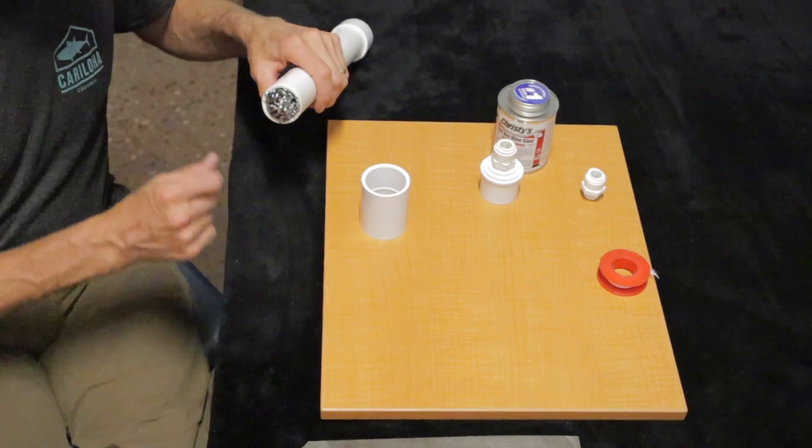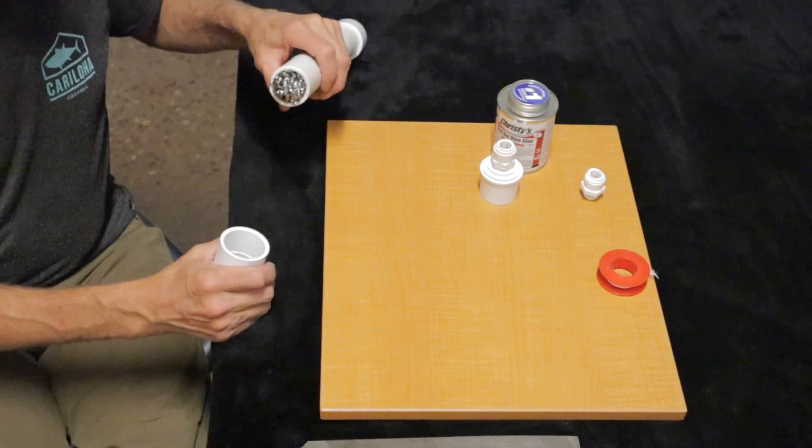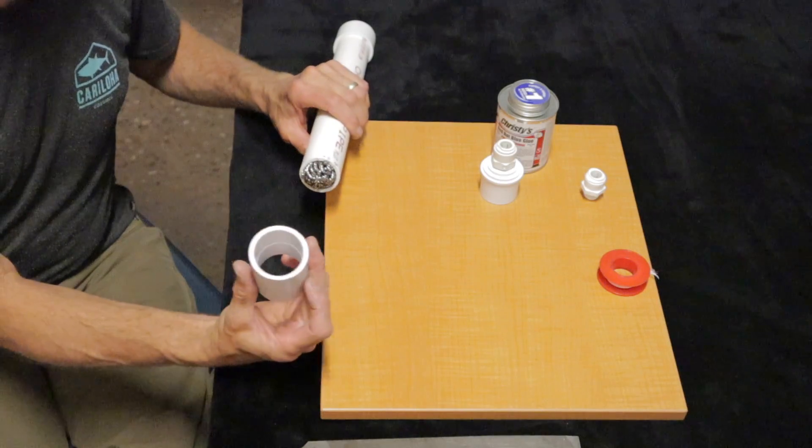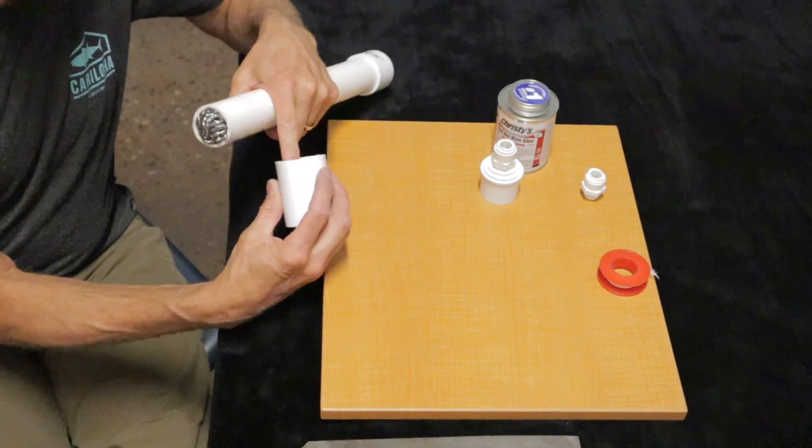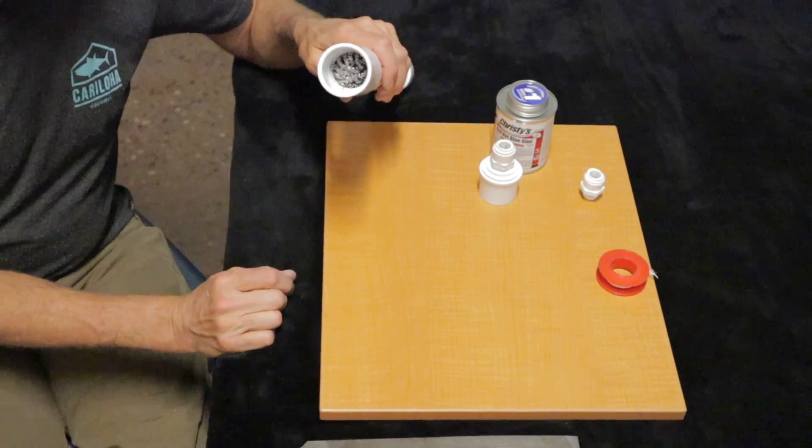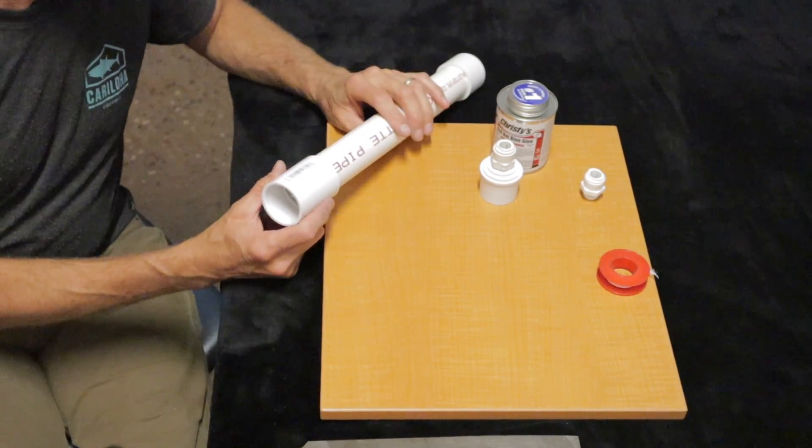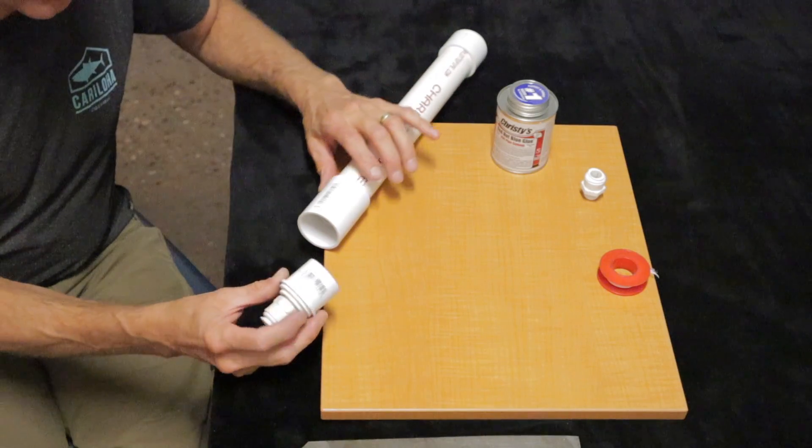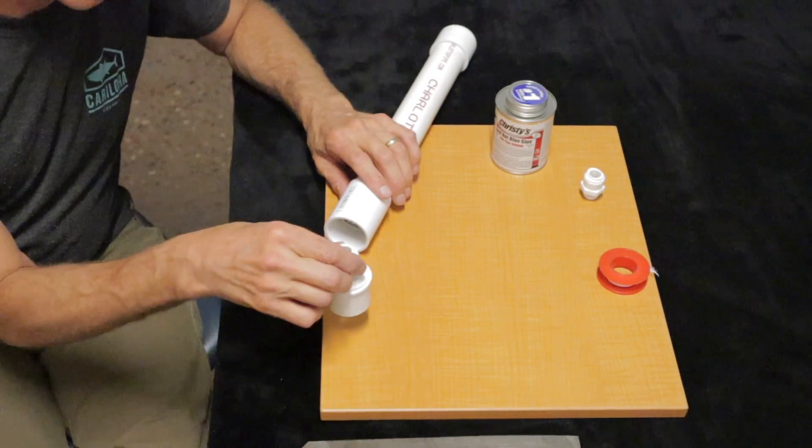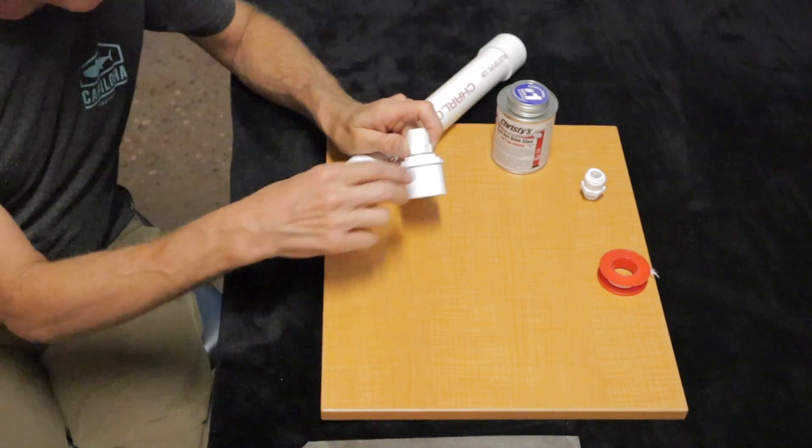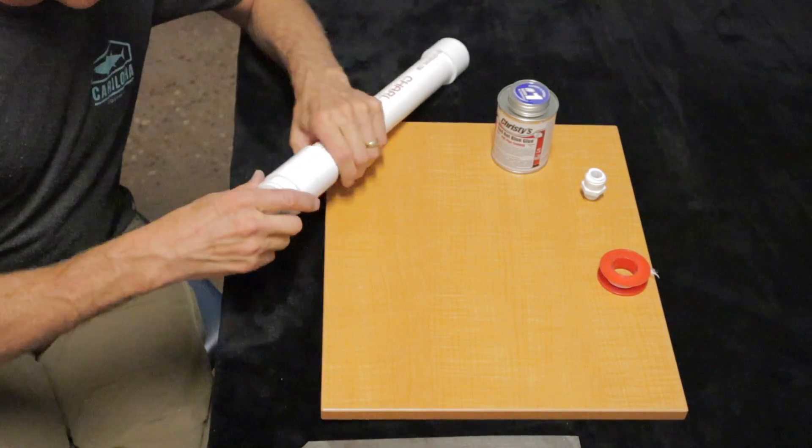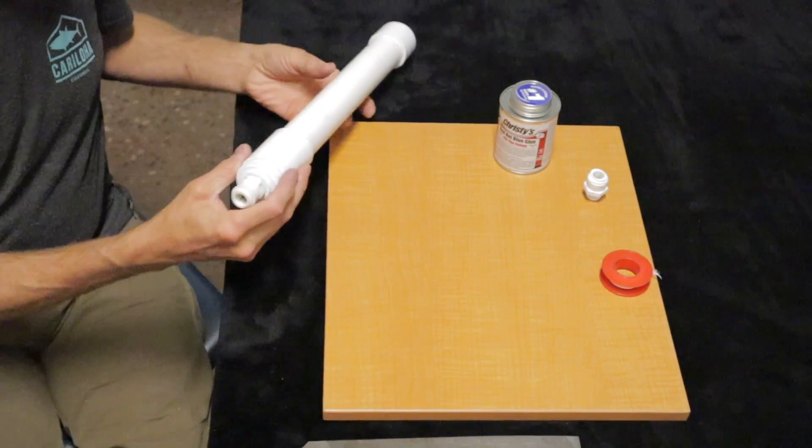So once you get them all the way in, you're just going to put on your coupler. You're going to put glue on this side and glue on this side of your coupler. Glue your coupler piece down in there and then you're going to glue your adapters that you put together earlier. You're going to put glue on this side and a little bit on the inside and then glue your adapter down in.